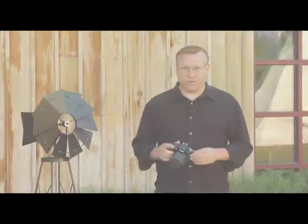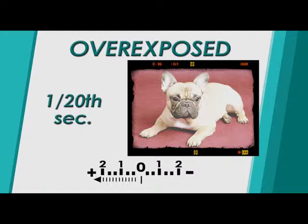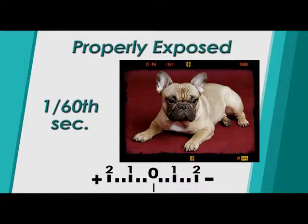Sometimes the light meter's arrow will be on the left side of the meter. When this happens, the light meter is indicating that the image will be too bright or overexposed. To fix this, you can adjust the shutter speed to a faster setting, which will allow less light to enter the camera and make the image darker. When the light meter's arrow is to the right side of the meter, it's indicating that the image will be too dark or underexposed. To fix this, you can adjust the shutter speed to a slower setting to allow more light into the camera to make the image brighter.